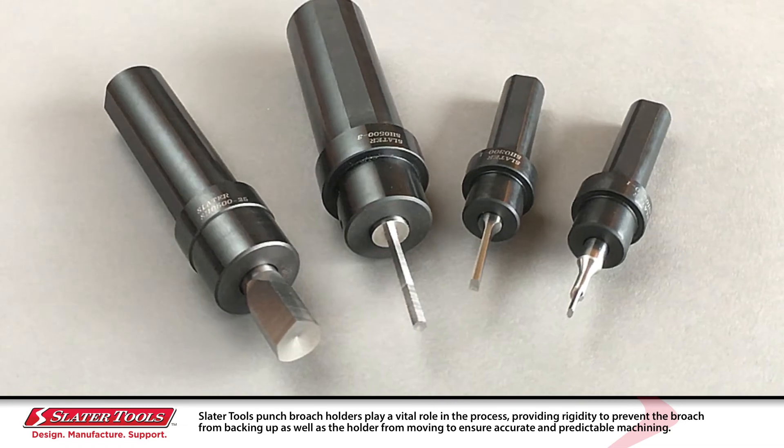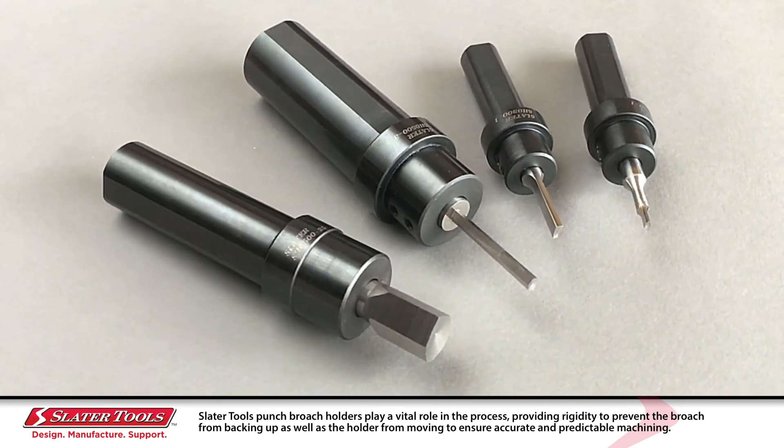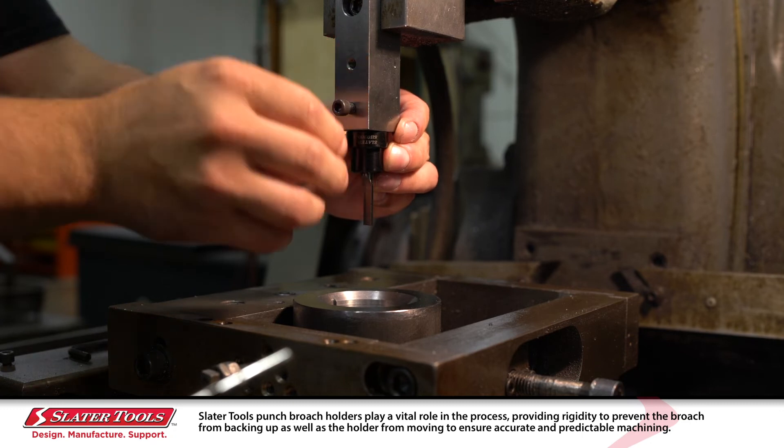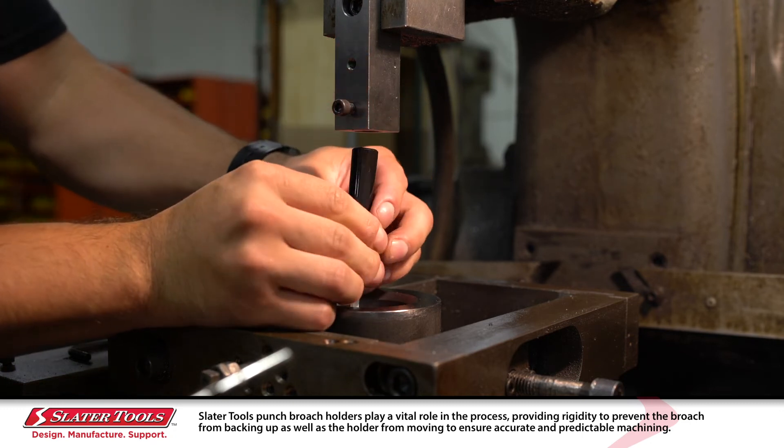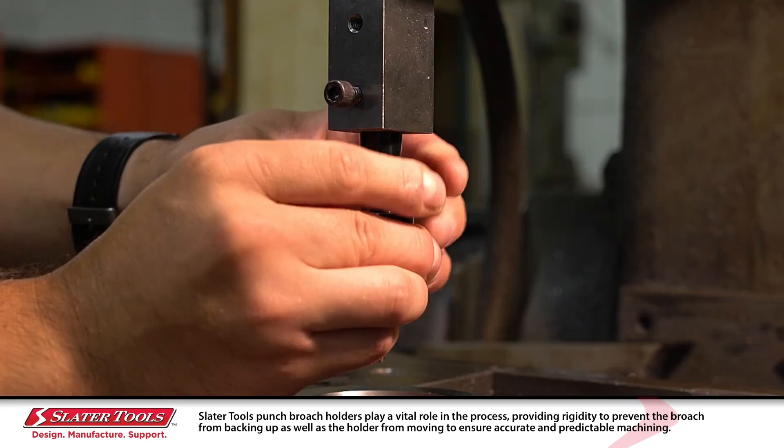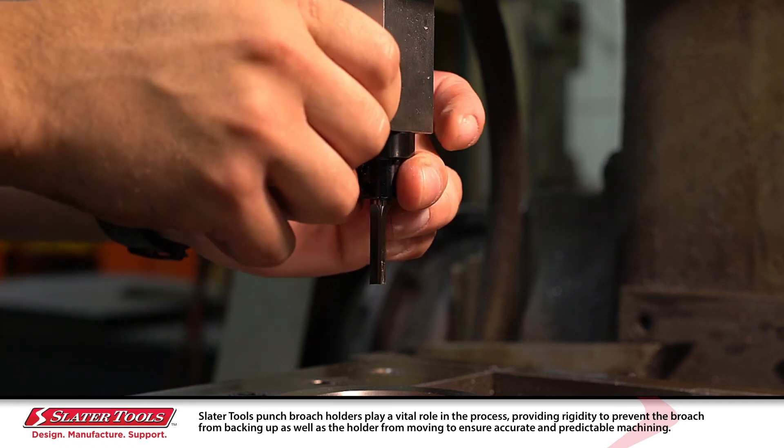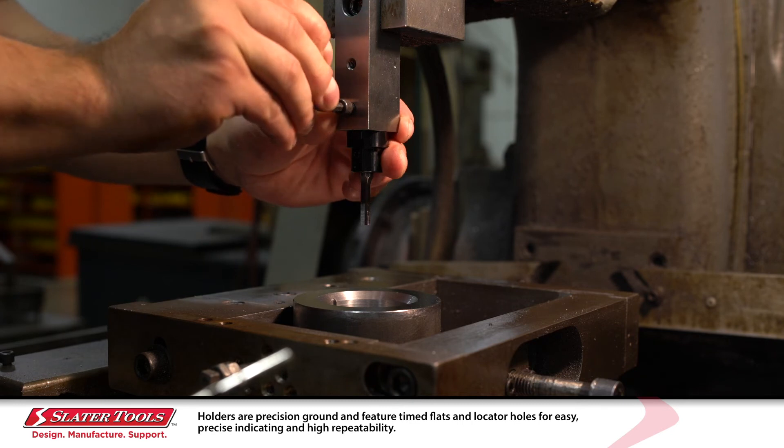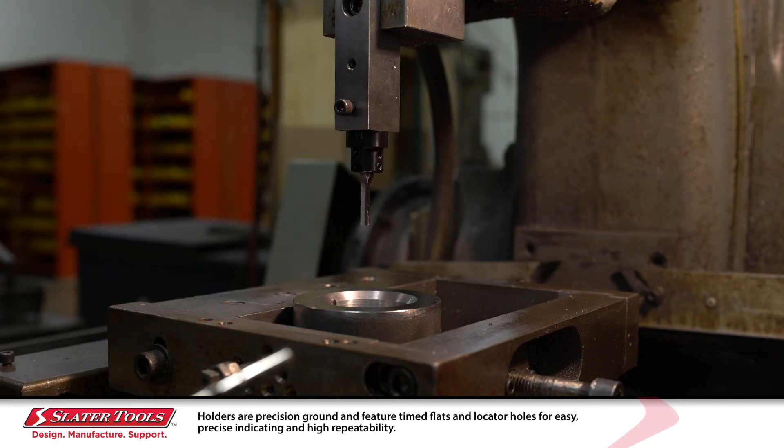Slater Tools punch broach holders play a vital role in the process, providing rigidity to prevent the broach from backing up as well as the holder from moving to ensure accurate and predictable machining. Holders are precision ground and feature timed flats and locator holes for easy, precise indicating and high repeatability.